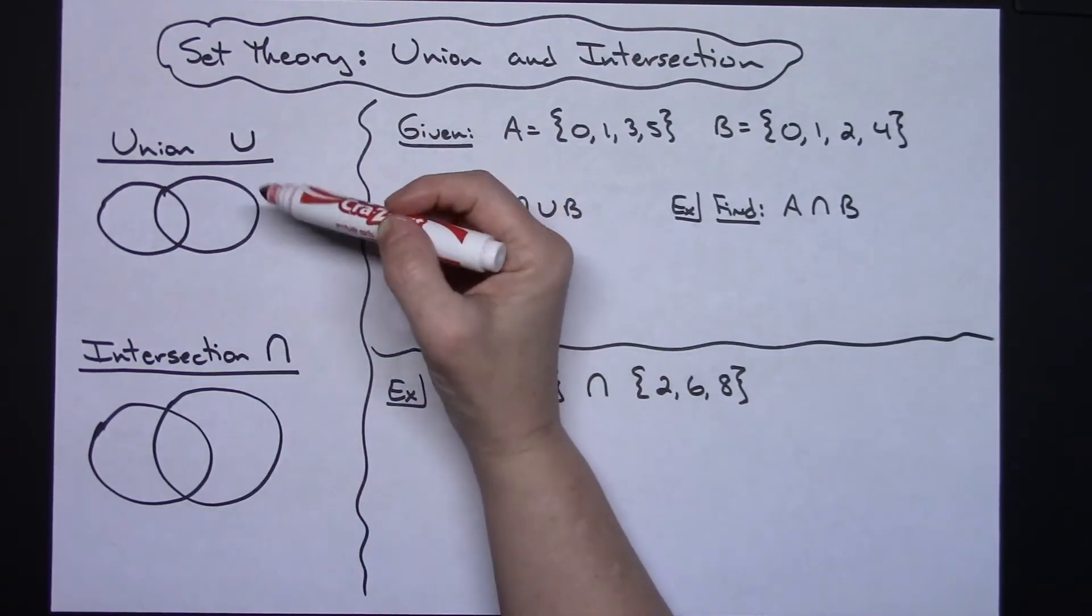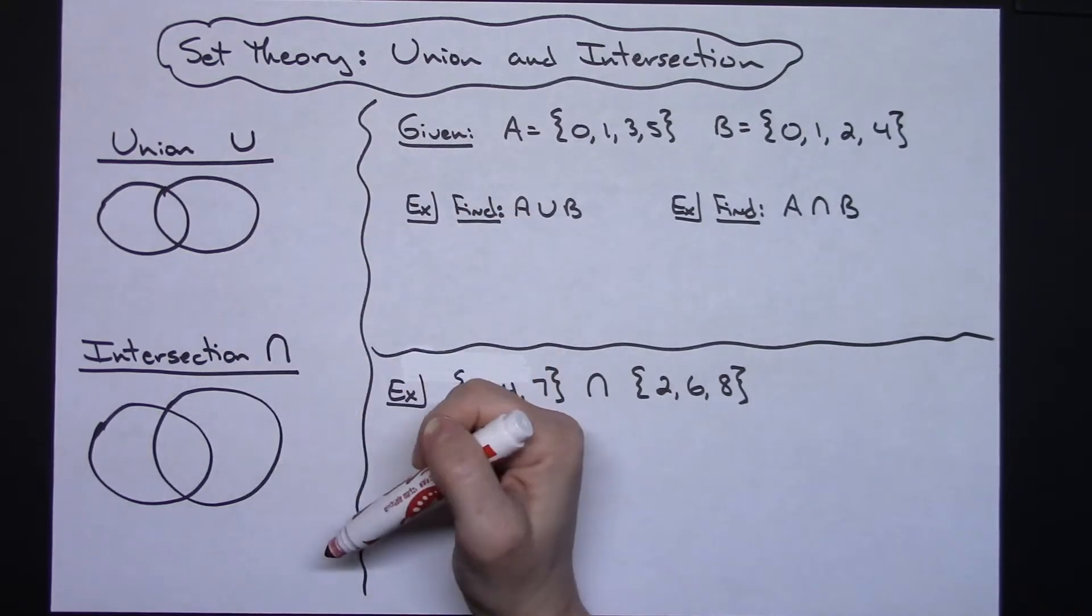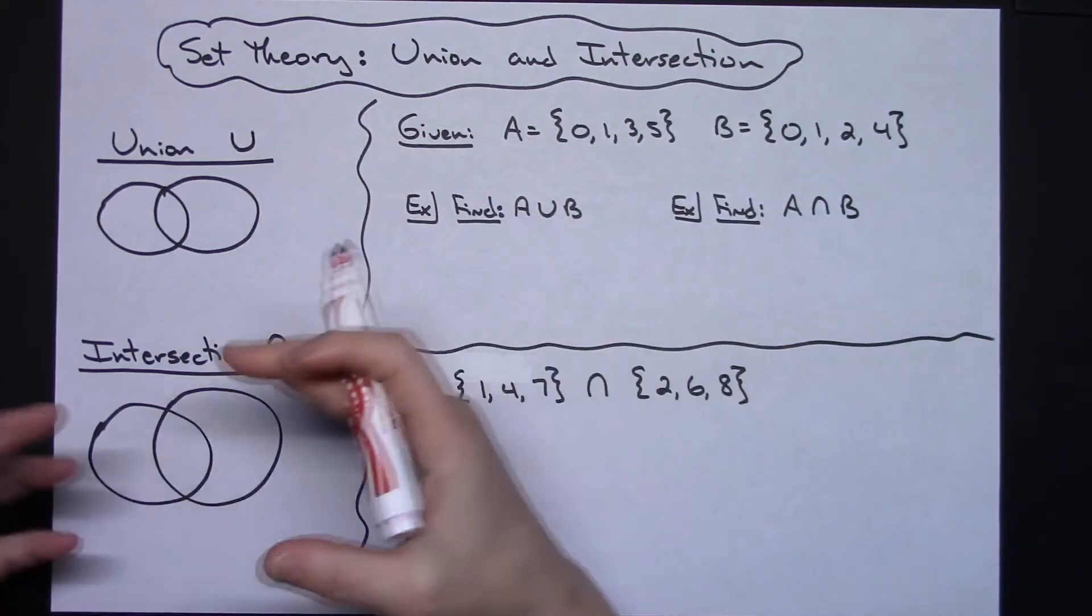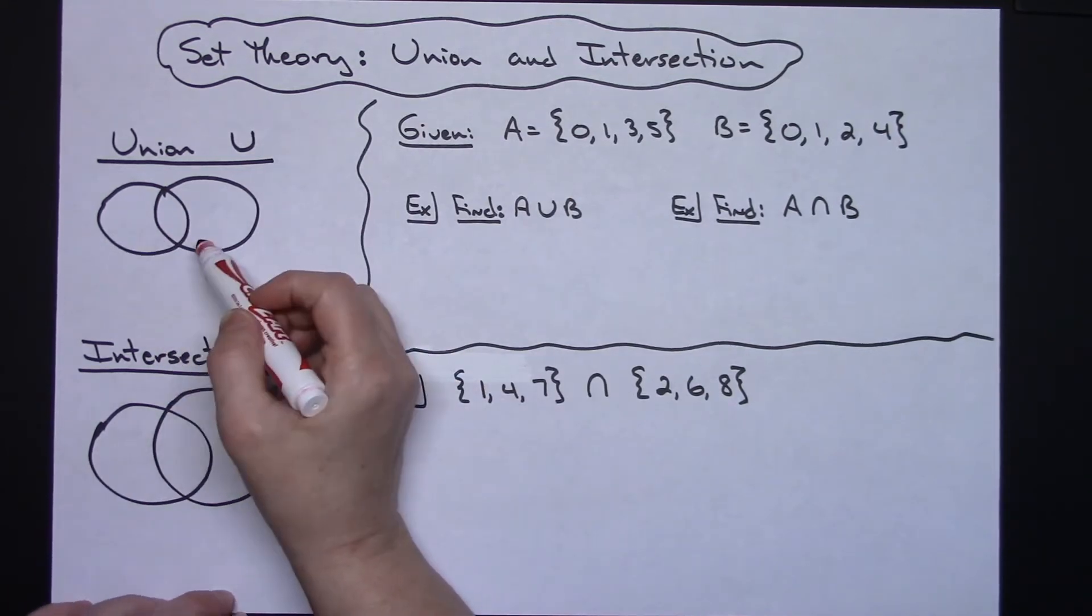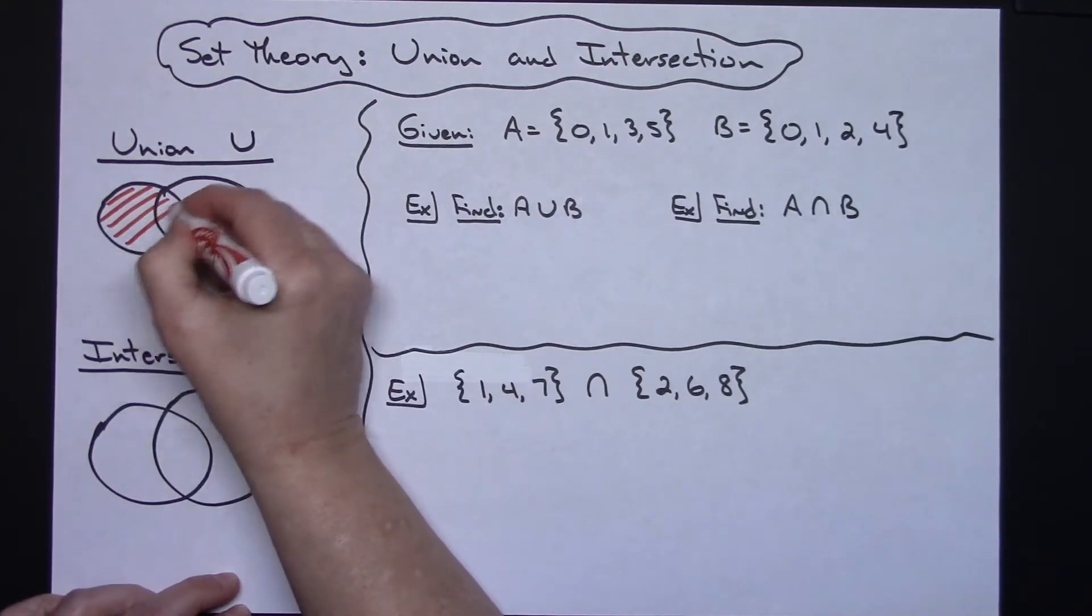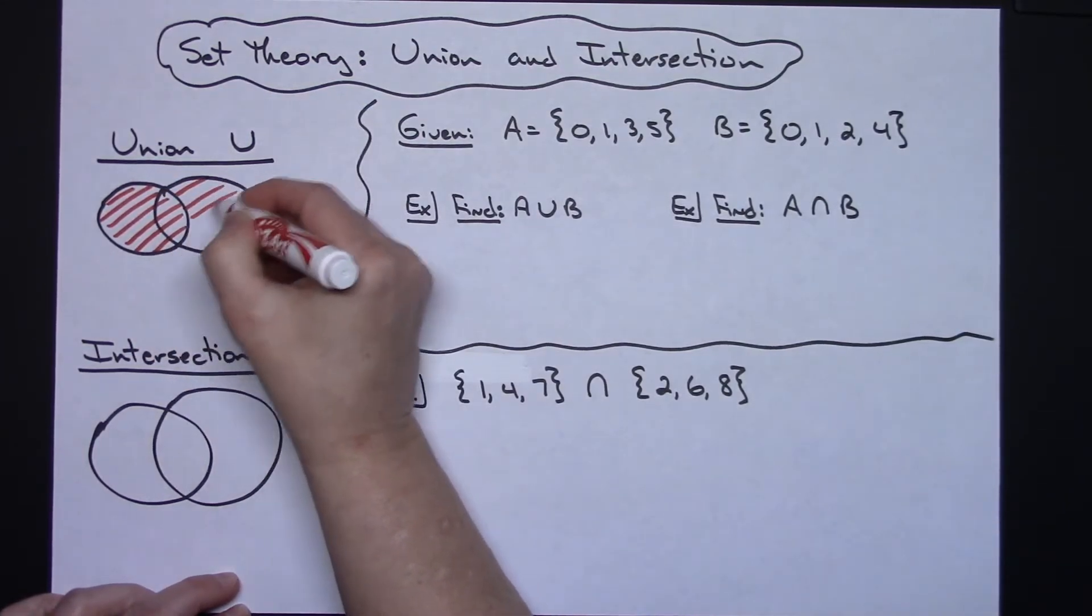To describe each of these and get an understanding of what they mean, it's going to be easier if we do this using a Venn diagram. If I am going to represent a union, that is literally the definition of a union: putting something together. So if I had two individual sets and I was going to union them together, it would end up being all of both of the sets.